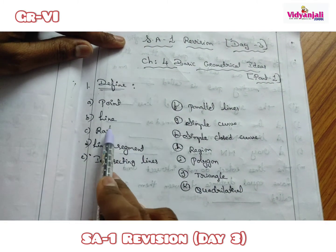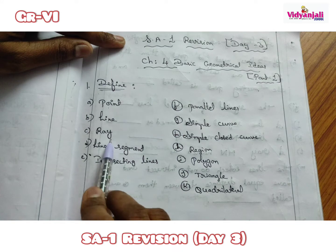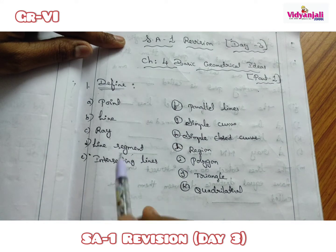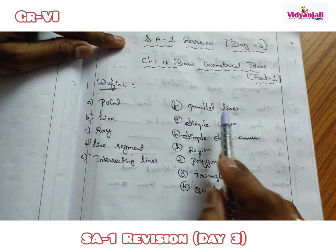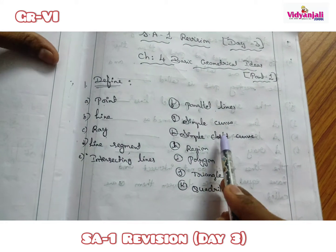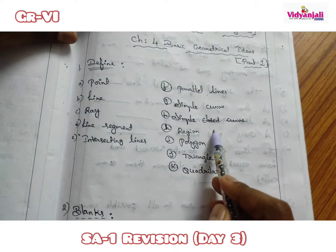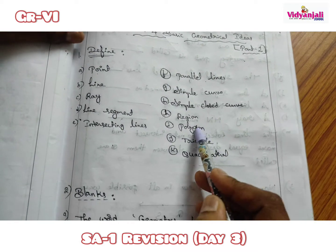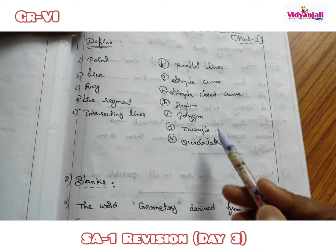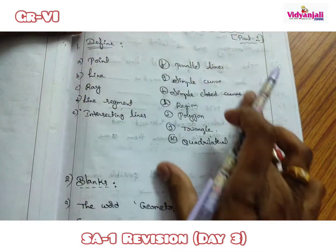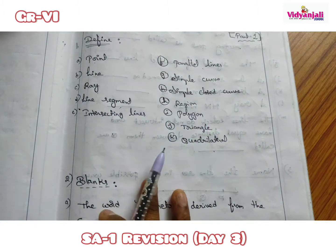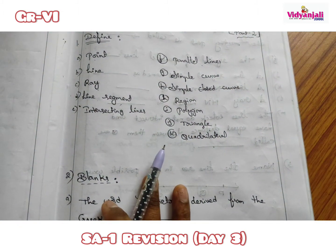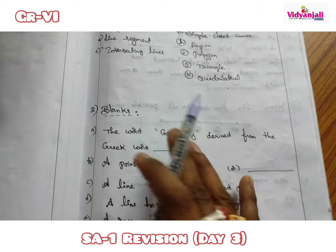The terms to define are: point, line, ray, line segment, intersecting lines, parallel lines, simple curve, region, polygon, triangle, and quadrilateral. You have to read and write all these definitions one time as today's revision.